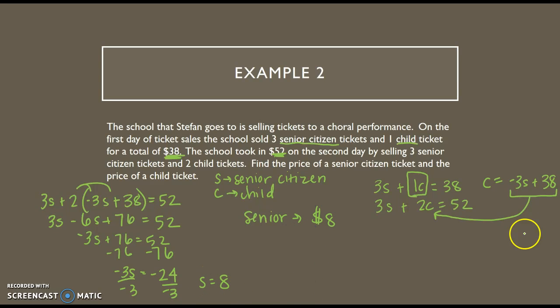Now I'm going to take this s and plug it back into my equation over here to find the child. So I get child equals negative 3 times 8 plus 38. Negative 3 times 8 is negative 24. Then negative 24 plus 38 is 14.